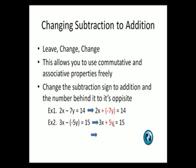In our second example, this time the number behind the subtraction sign is negative. But that's fine, we can still work the problem. You leave the 3x alone, the subtraction becomes addition, and negative 5y becomes positive 5y.